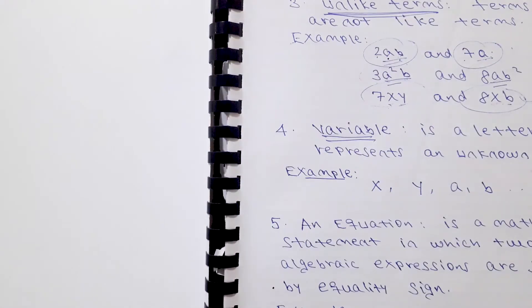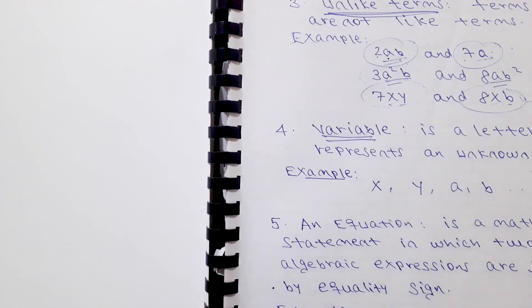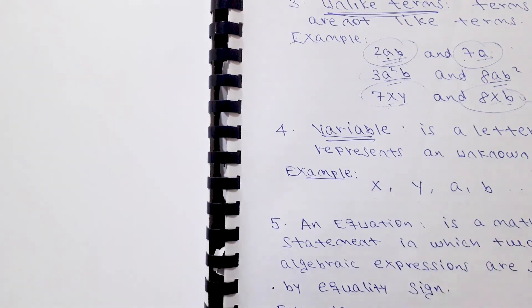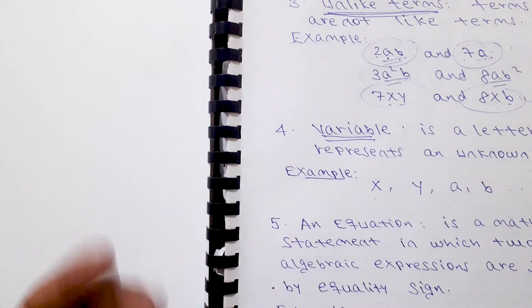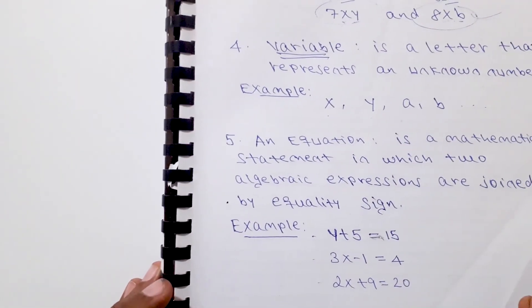A variable is a letter that represents an unknown number. A variable is a symbol, which is a letter. Common examples of variables used in mathematical expressions are x, y, a, and b.